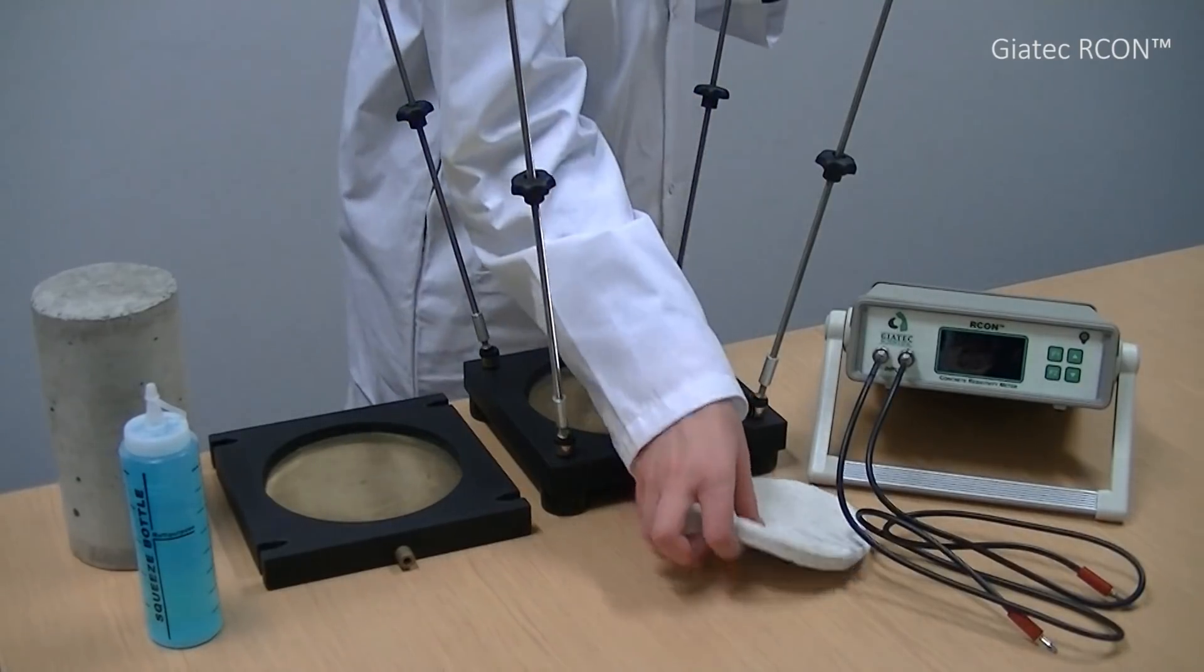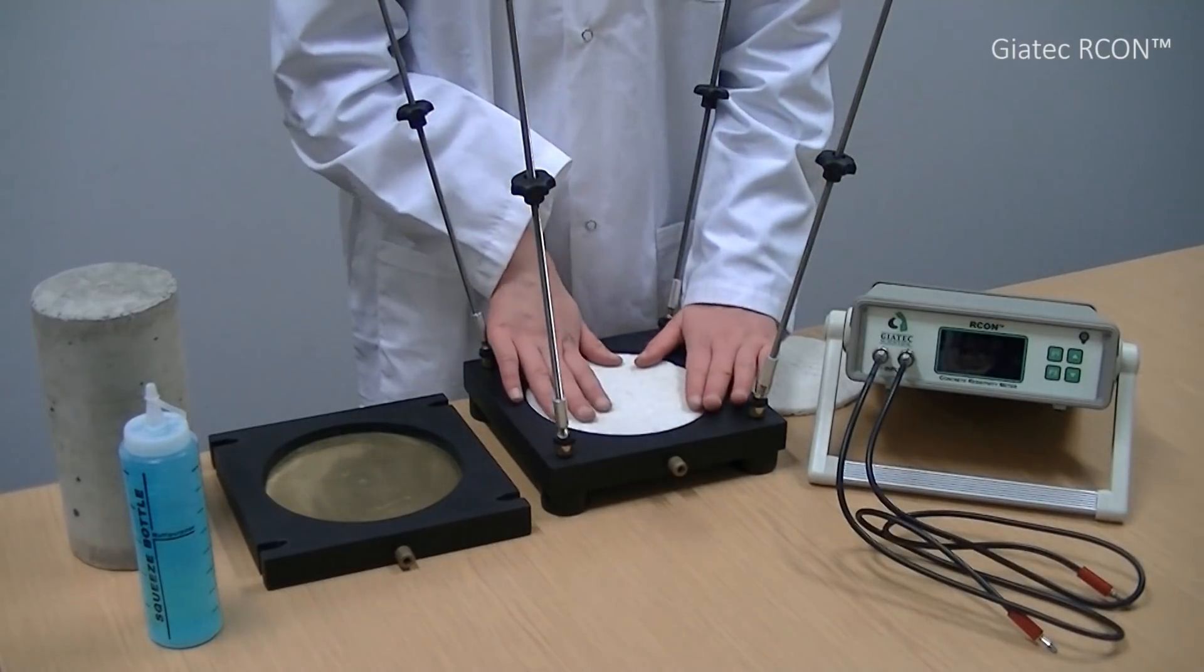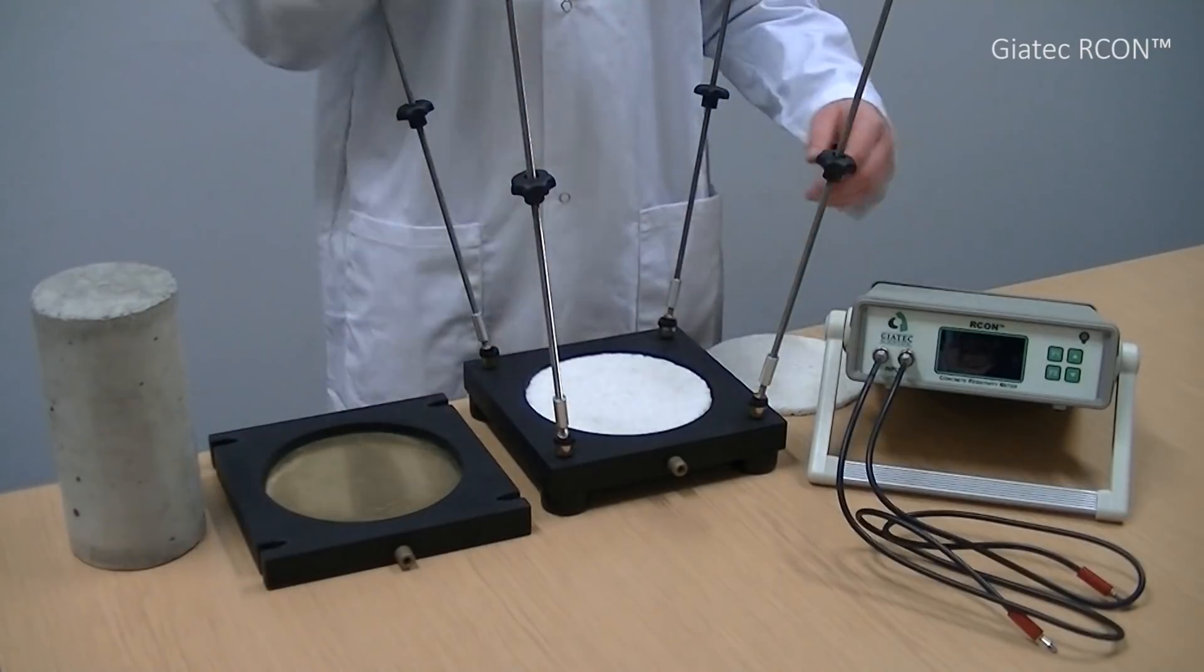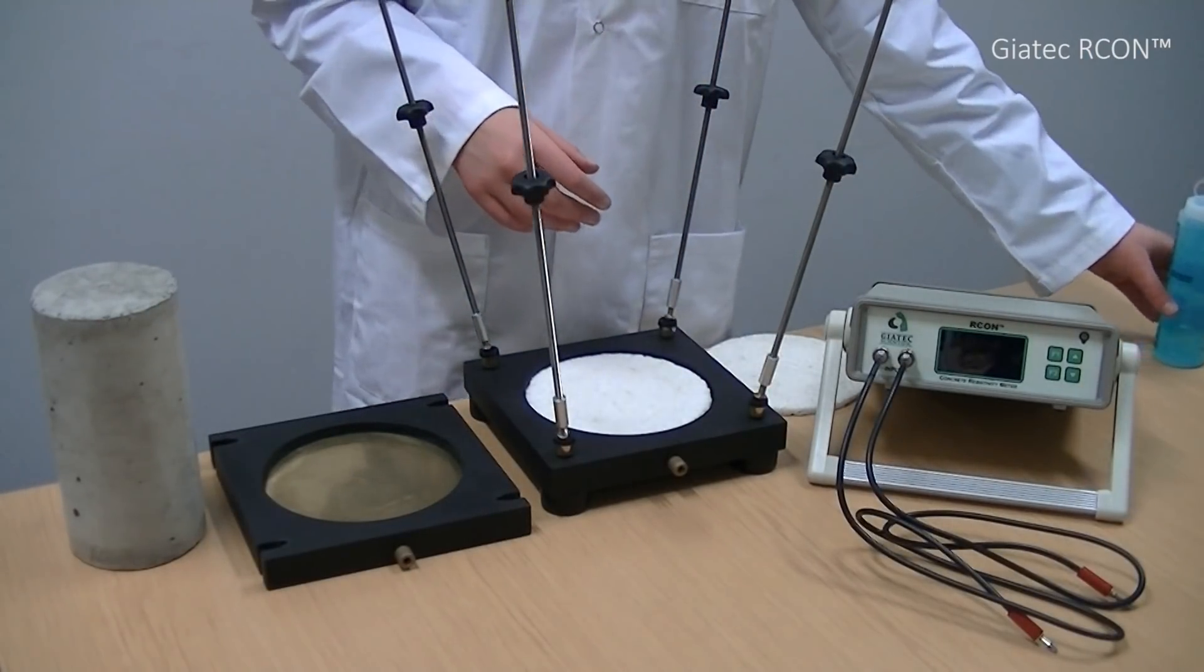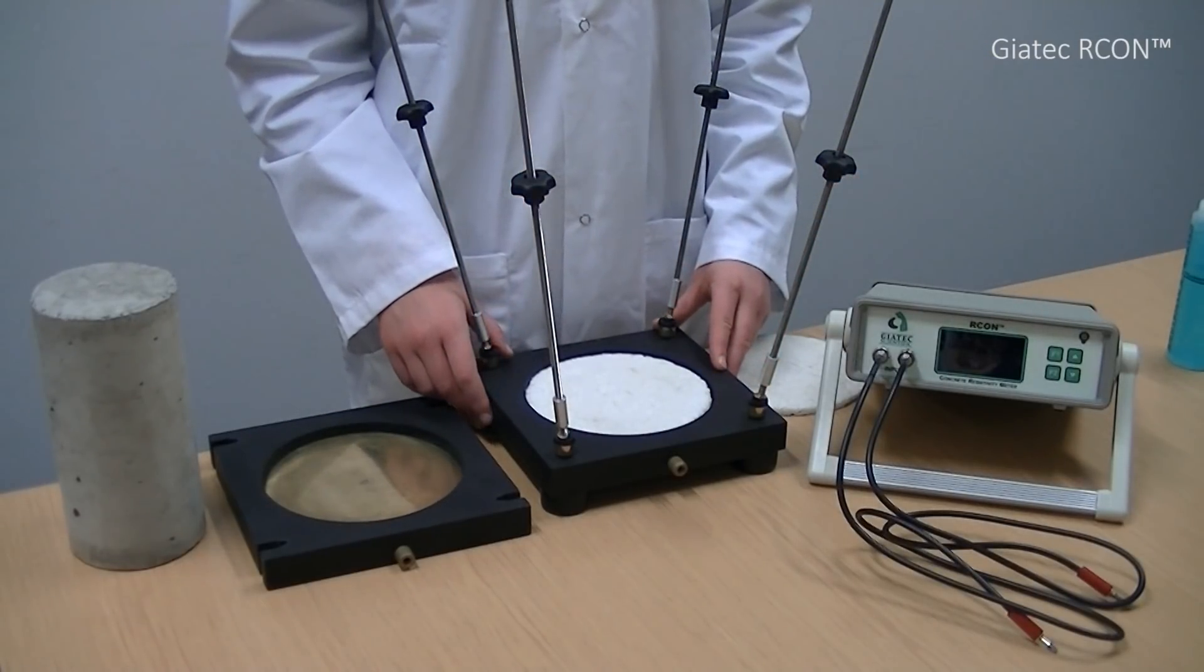Next, I saturate the two sponges with water and place one of them in the circular portion of the plate. You may need to use conductive gel instead of water if the concrete is too dry. The diameter of the sponges must be the same as or larger than that of the concrete sample to minimize measurement errors.